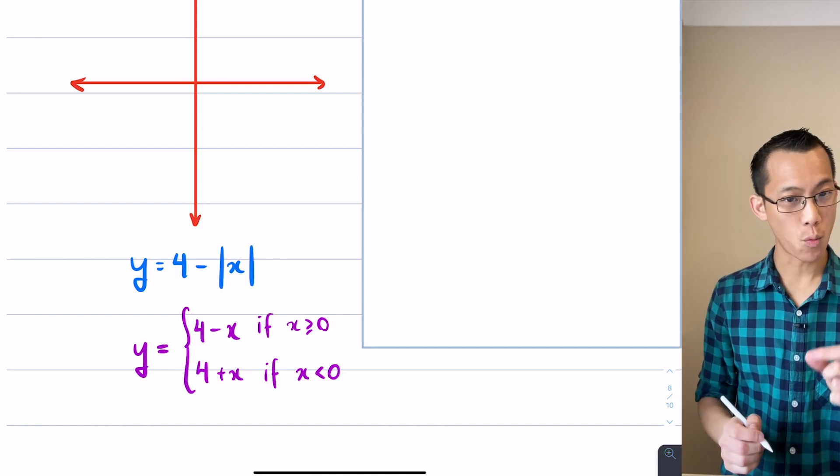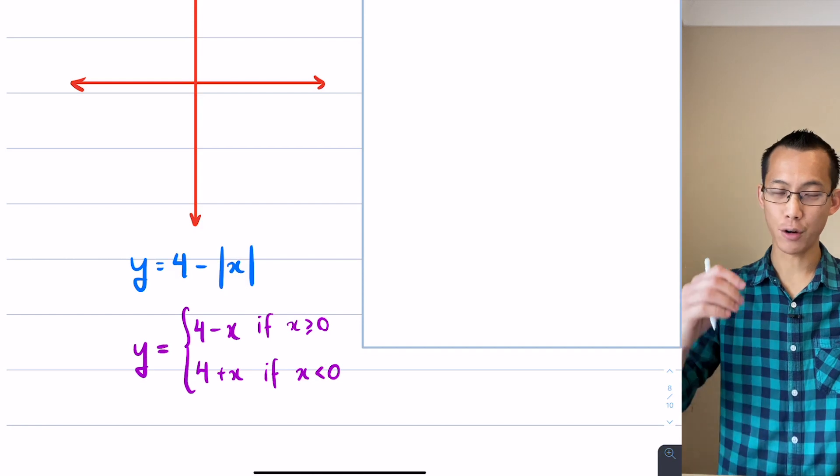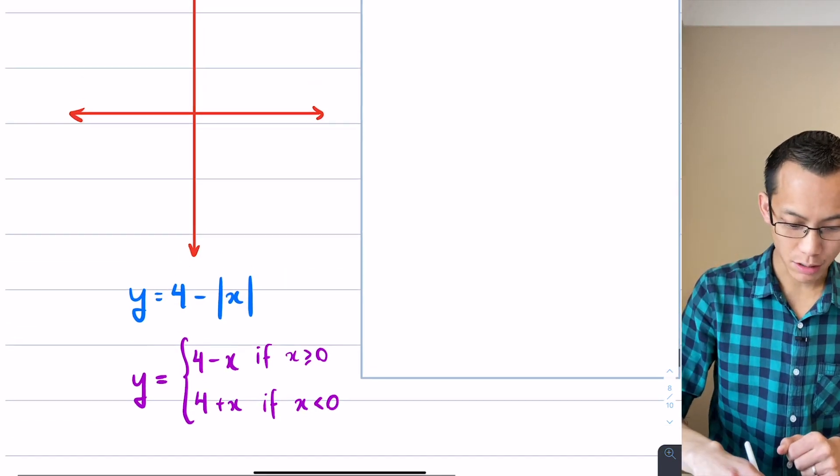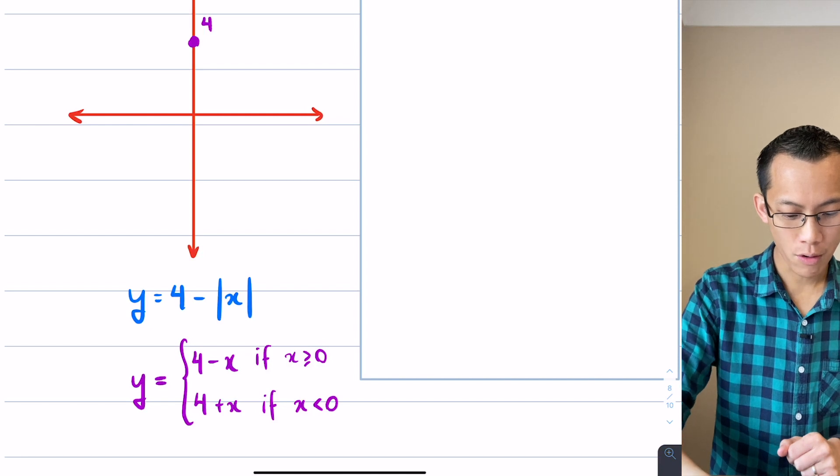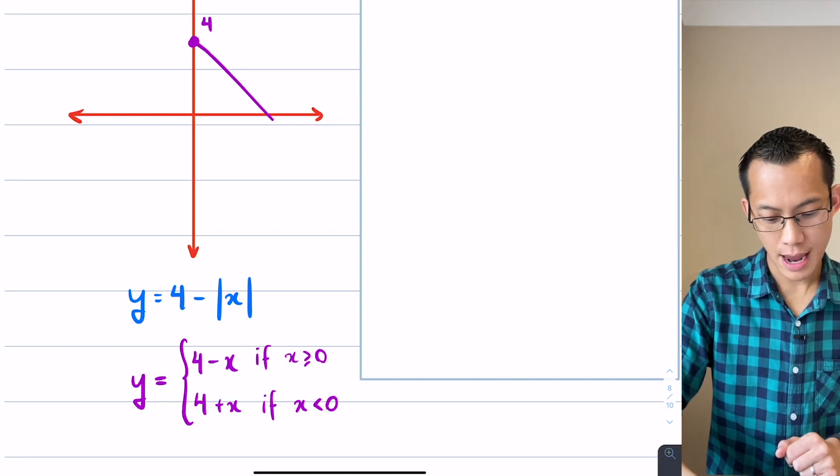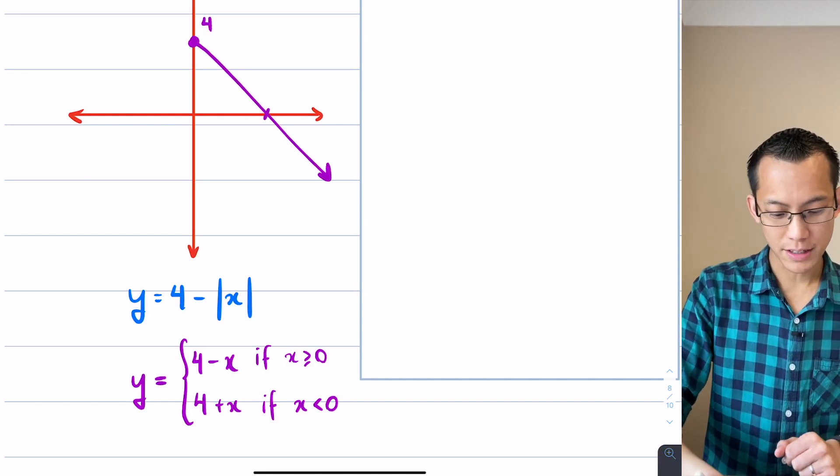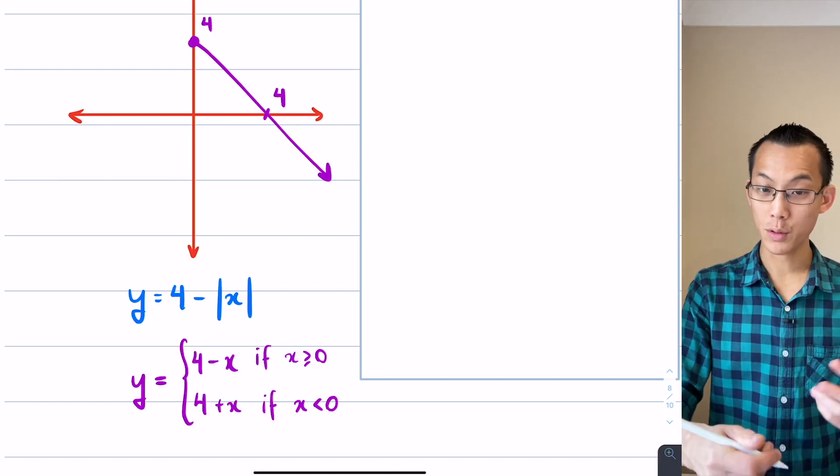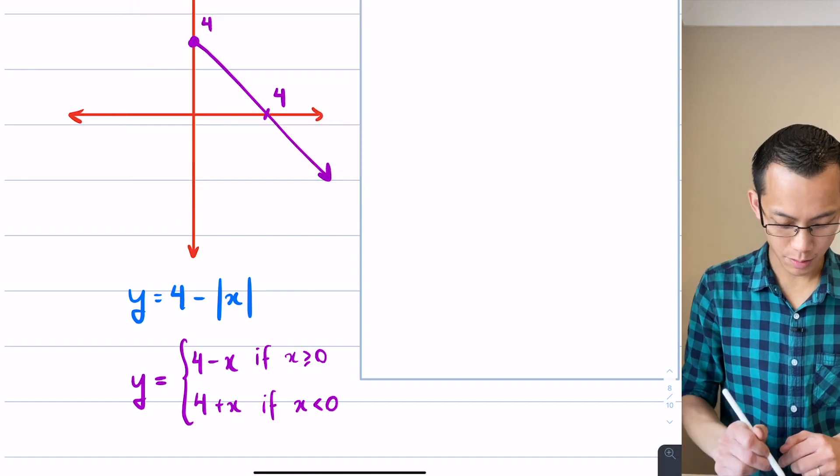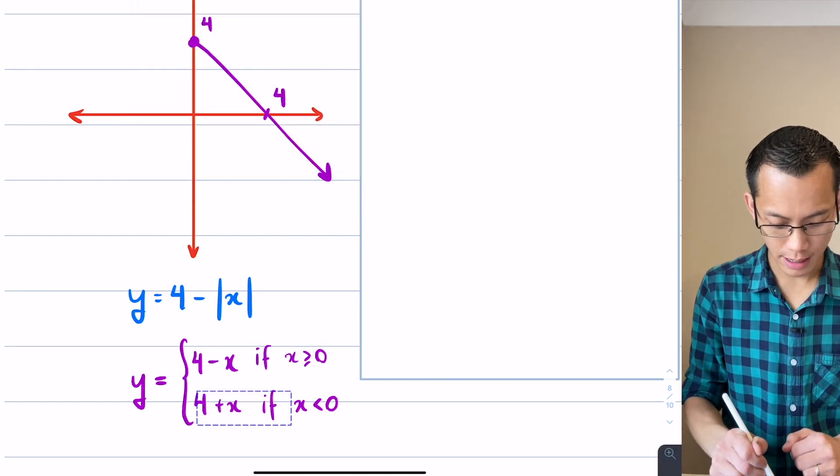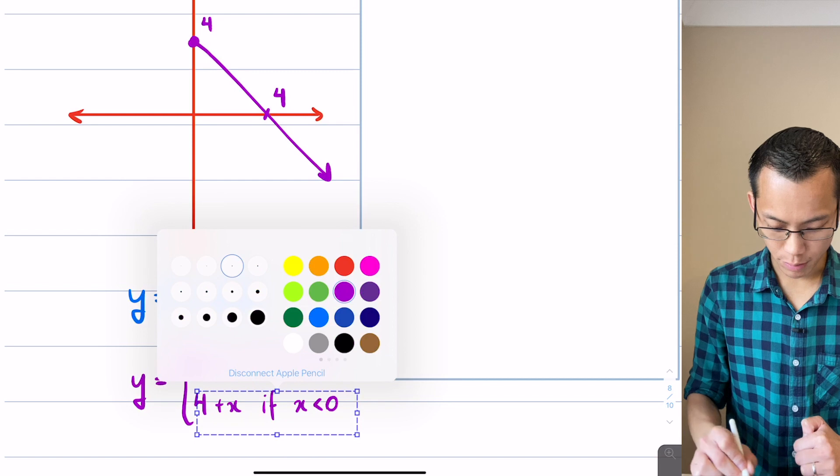4 minus x is going to have a y-intercept at 4 and a gradient of negative 1, so I'll go ahead and draw that guy in. There's 4 and it's going to have a gradient of negative 1, so that means I can read off that x-intercept also as 4.